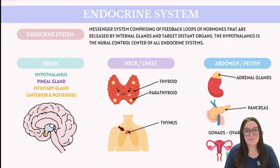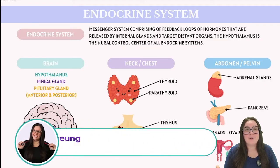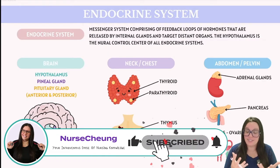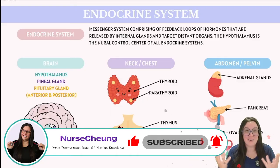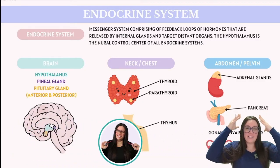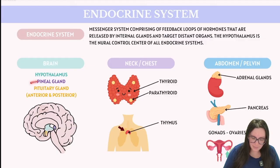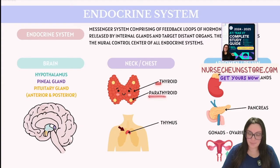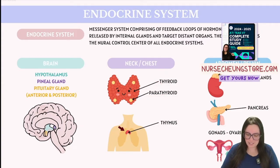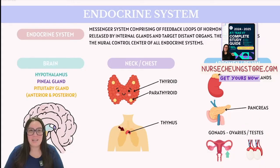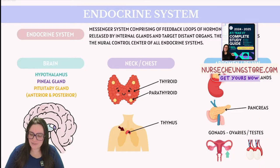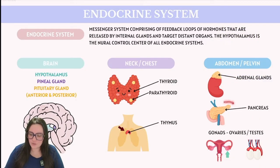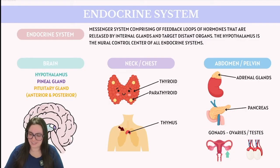The endocrine system is composed of various structures that release hormones, which can occur at the individual cell level or the entire organ. Starting at the top when it comes to our brain, we have the hypothalamus, the pineal gland, and the pituitary gland. Moving down to our neck, we have the thyroid gland and the parathyroid gland. Further down into our chest, we have the thymus gland. Positioned right above our kidneys, we have the adrenal gland, and right next to our stomach, we have the pancreas.